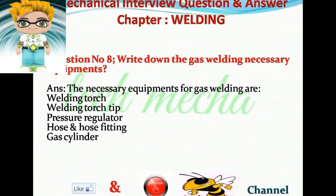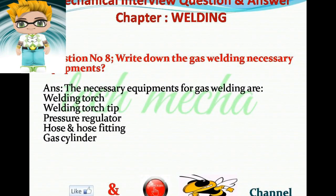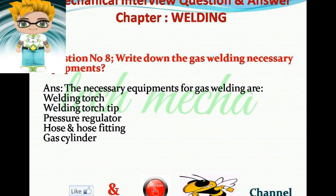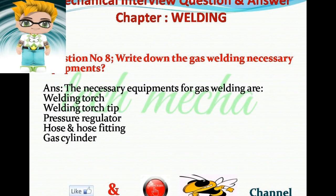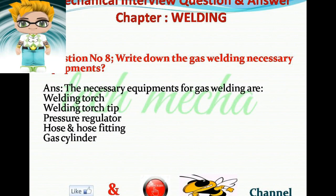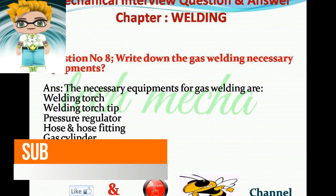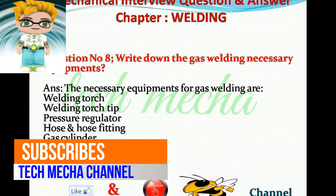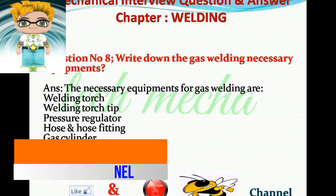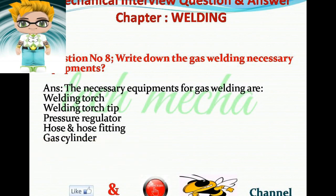Question number eight: Write down the necessary equipment for gas welding. Answer: The necessary equipment for gas welding are: one, welding torch; two, welding torch tip; three, pressure regulator; four, hose and hose fittings; five, gas cylinder.